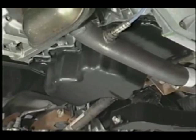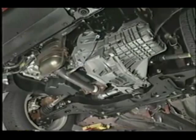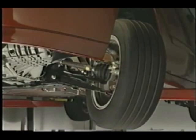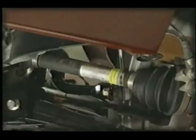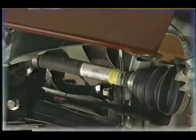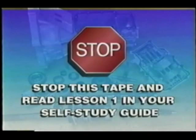Front wheel drive vehicles use a unique type of transmission system called a transaxle. It combines both the transmission and differential into one unit. However, because the driving wheels on a front wheel drive vehicle are also used for steering, a special type of drive shaft is needed. Front wheel drive shafts are known as half shafts. Each of these systems will be described in detail in this self-study course. Stop this tape now and read lesson one in your self-study guide. After answering the review questions, restart the tape and watch lesson two.